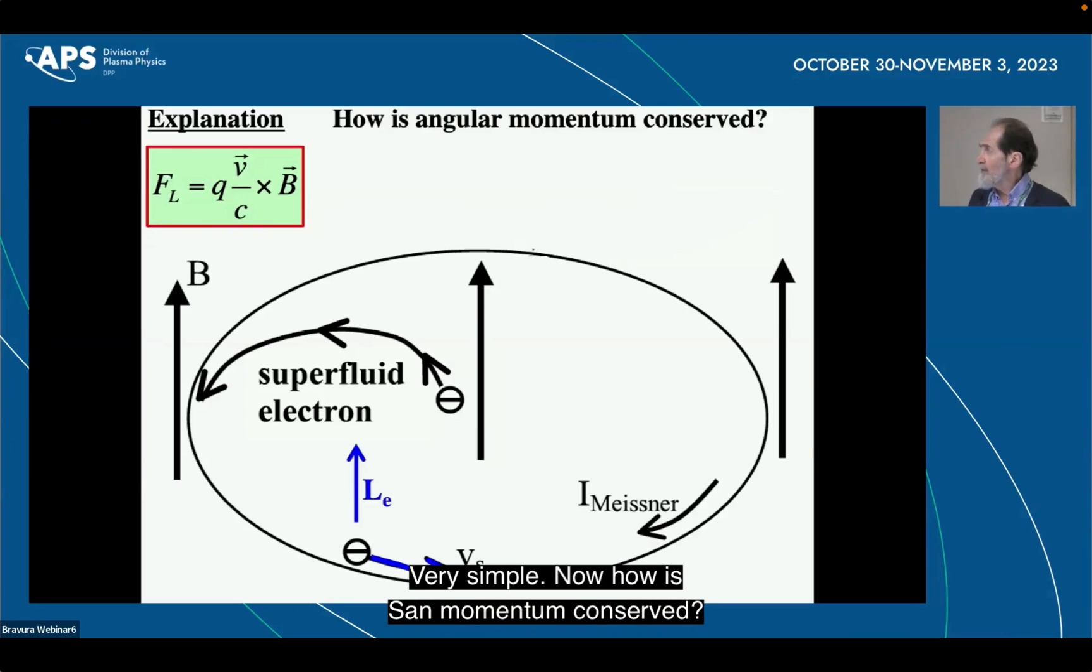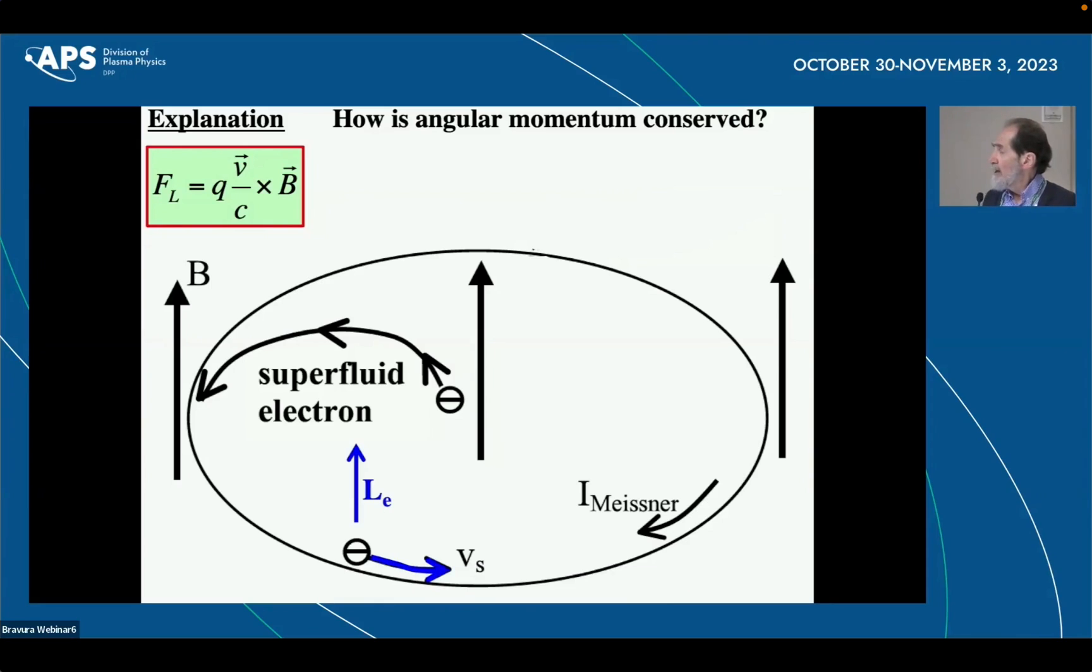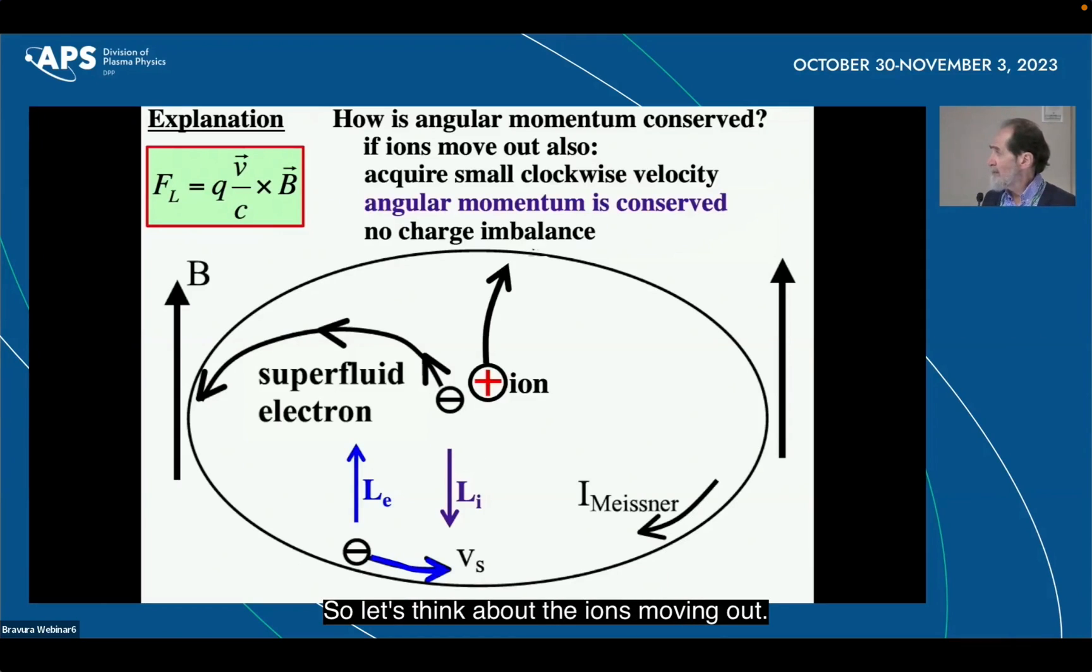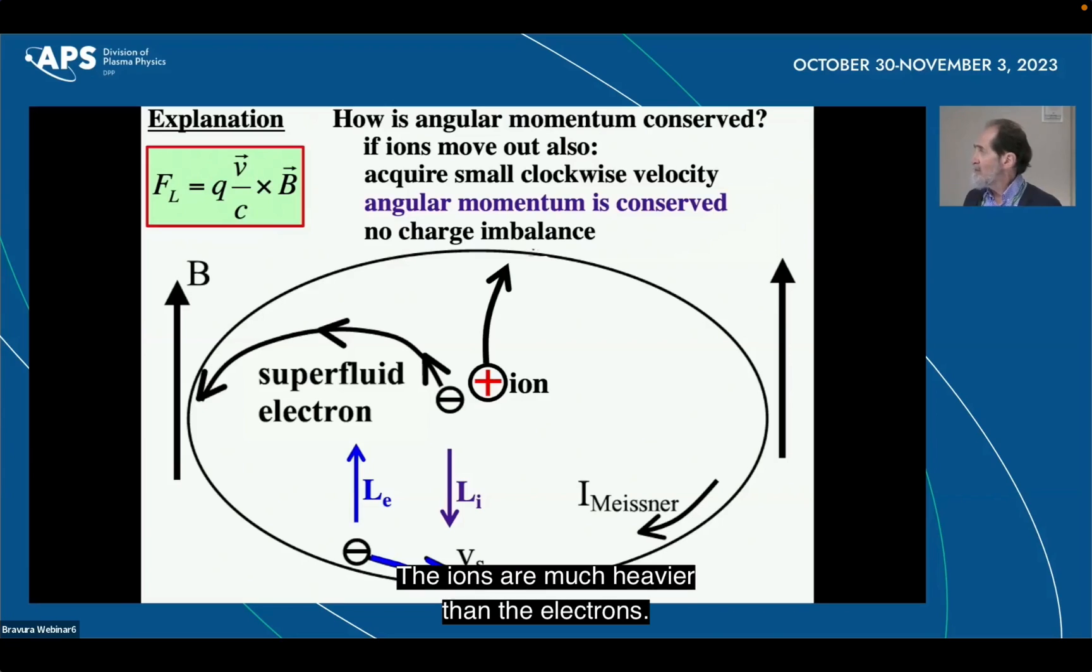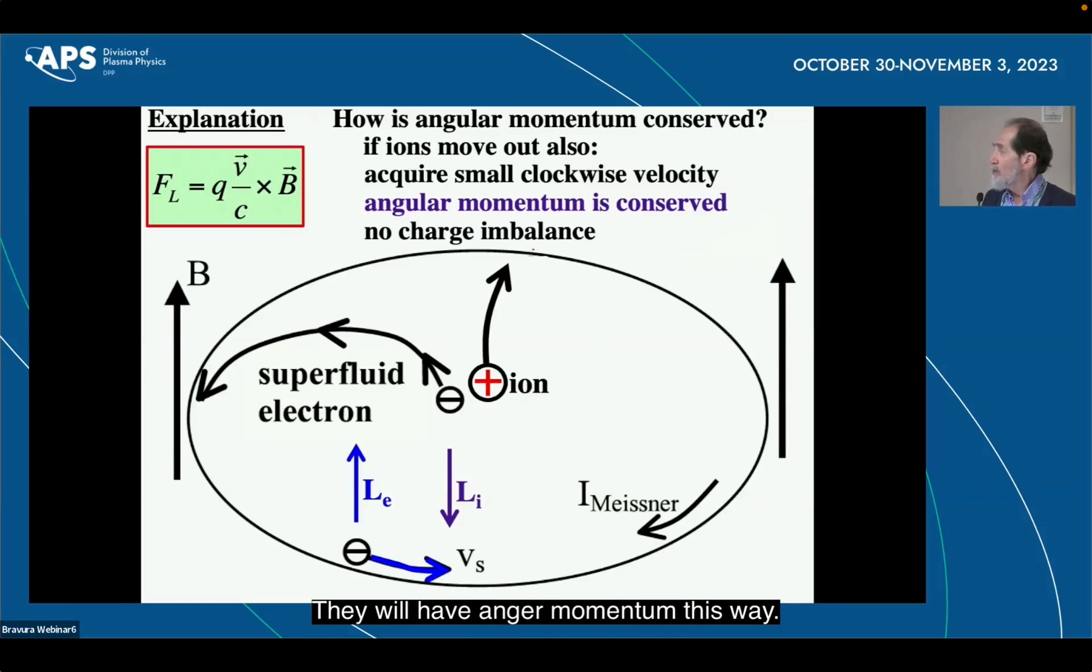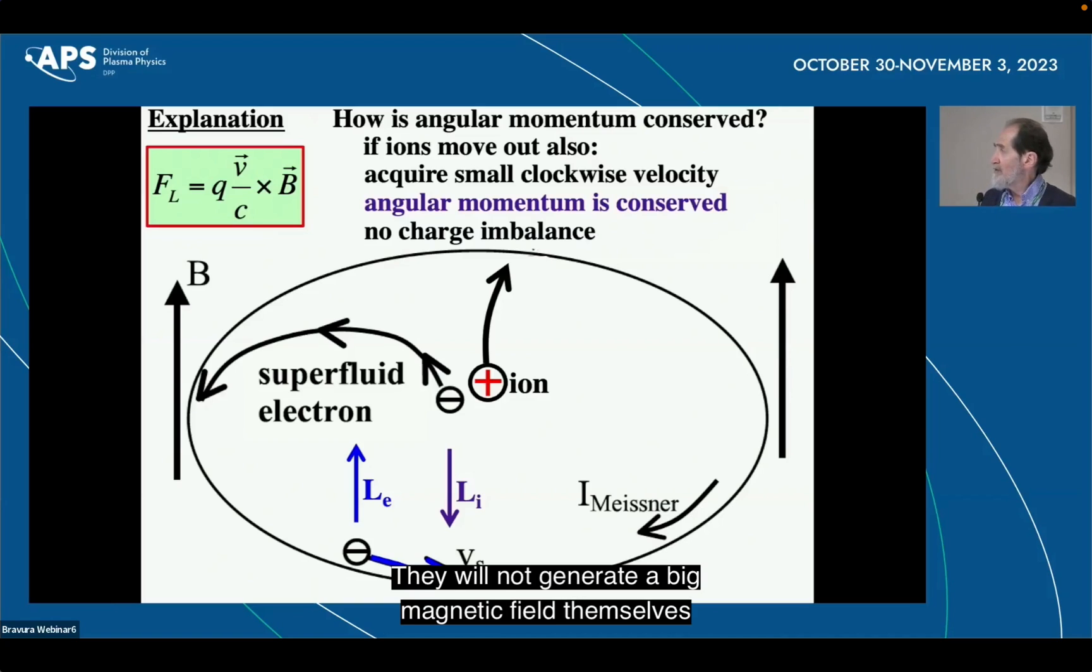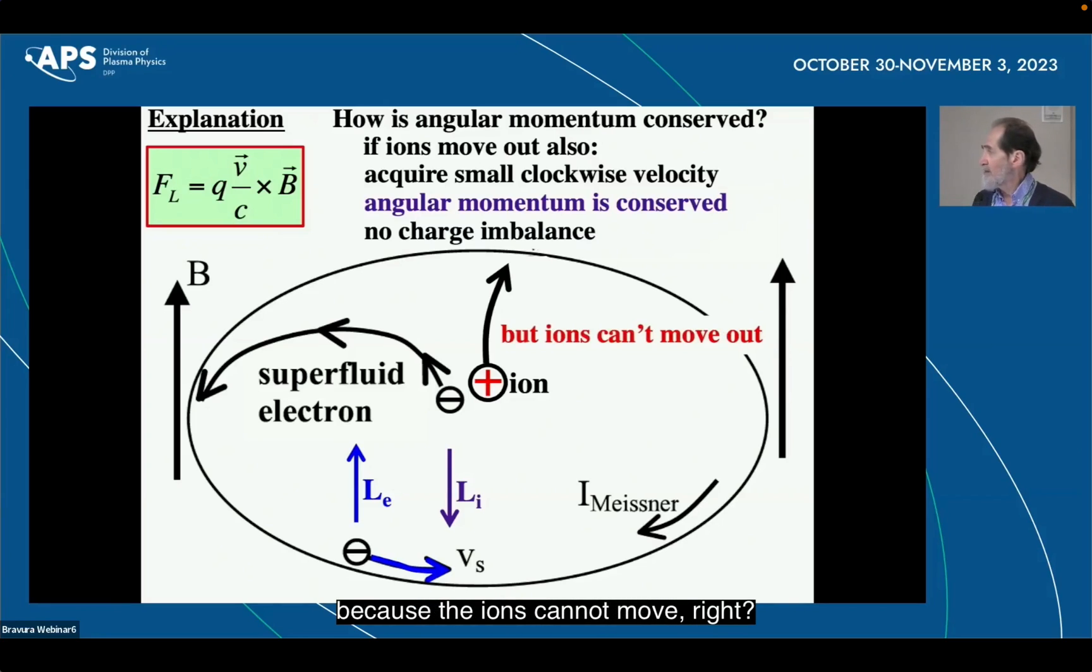Now, how is angular momentum conserved? Because the electron flowing this way carries angular momentum vertically like this out of the screen. And of course, there's also a charge imbalance. So let's think about the ions moving out. The ions are much heavier than the electrons. They will be bent by the magnetic field in this way. They will have angular momentum this way. They will not generate a big magnetic field themselves because they are very heavy, angular momentum is conserved, no charge imbalance. And we have solved the problem. But of course, we have not solved the problem because the ions cannot move. The ions are fixed in the solid.